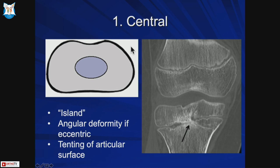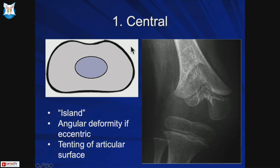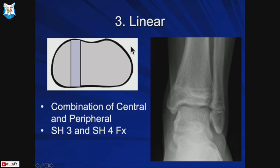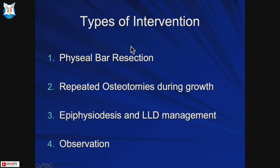There are three types of physeal arrest. Central arrest is an island of growth arrest that can lead to tenting of the articular surface. Peripheral arrest is on the edge and can lead to progressive angular deformity. Linear arrest runs from front to back as an entire bar, and is usually seen in Salter-Harris 3 and 4 fractures, which are fractures across the physis.